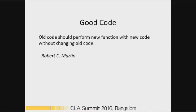So what actually is good code? According to Robert C. Martin, all code should perform new functions with new code without changing old code. Basically, existing code should not need to change when we want to add another functionality to the same application.